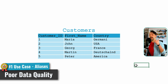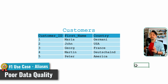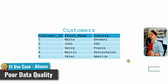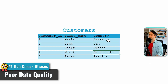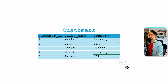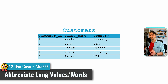We have two options: either we go back to the original datasets and do the changes there, or the second option is we can do the changes directly in Tableau using aliases. So how are we going to clean this up? We'll remove the typo, then instead of 'deutschland' we'll have 'germany', and instead of 'america' we can have 'usa'.